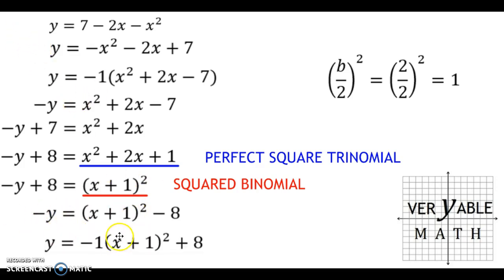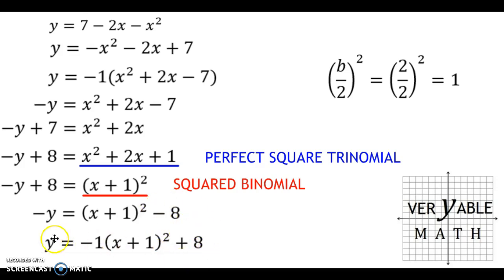Dividing both sides by negative 1 is exactly the same as multiplying both sides by negative 1. I turn x plus 1 squared into negative 1 times x plus 1 squared, and I turn negative 8 into positive 8. So this is in completed vertex form. We have the a value of negative 1, the h value of negative 1, and the k value of positive 8.